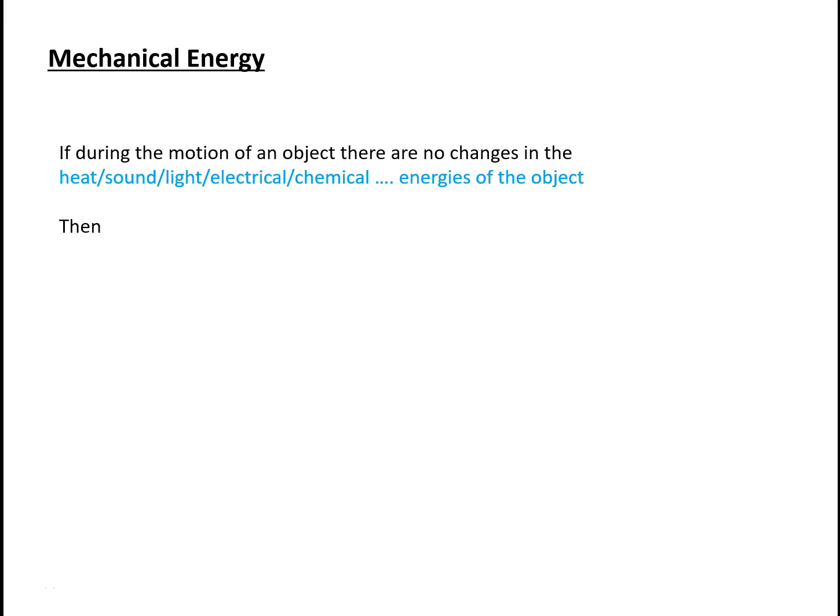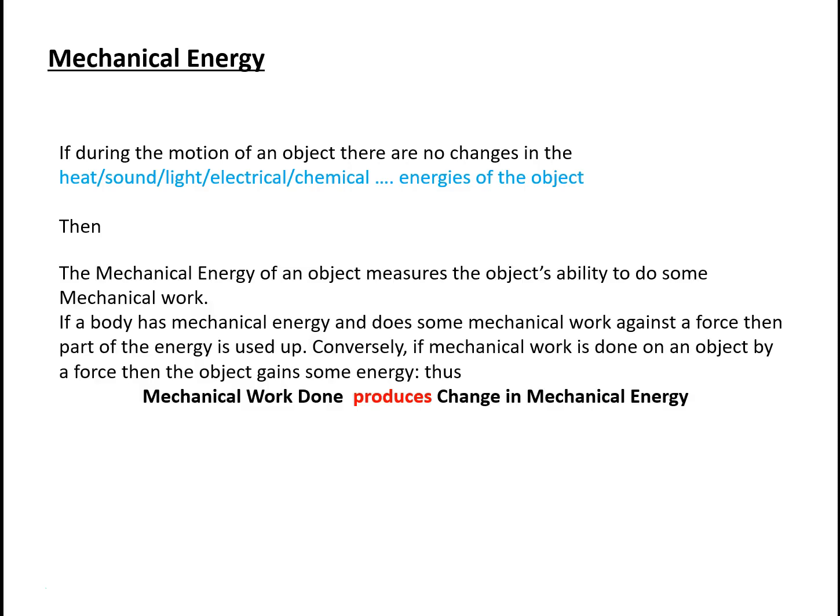If during the motion of the object there are no changes in all of these different non-mechanical types of energy, then we can say that the mechanical energy of an object measures the object's ability to do some mechanical work. So if a body has mechanical energy and does some mechanical work against a force, then part of that energy is used up. Conversely, if mechanical work is done on an object by a force, then the object gains some energy. Thus, we have the important principle that if mechanical work is done on the object, then we get a change in the mechanical energy of the object.